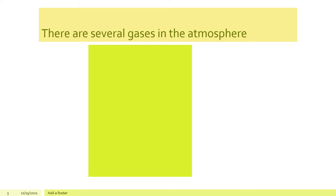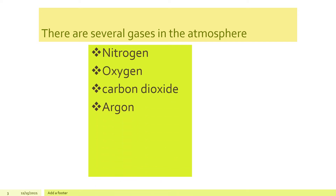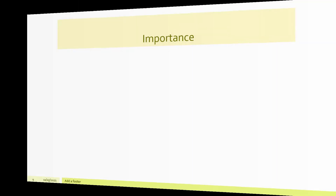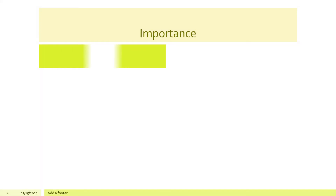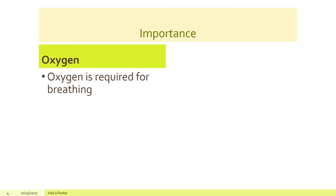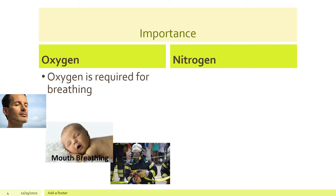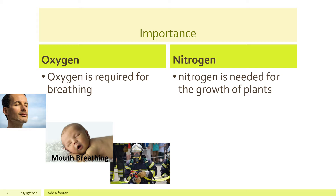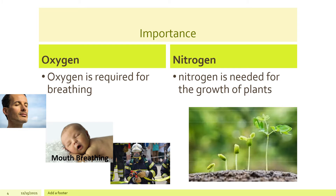There are several gases in the atmosphere around us. They are Hydrogen, Oxygen, Carbon Dioxide, Argon, Nitrogen, etc. Among various types of gases in the atmosphere, oxygen and nitrogen are very important. Oxygen is required for breathing and nitrogen is required for the growth of plants.